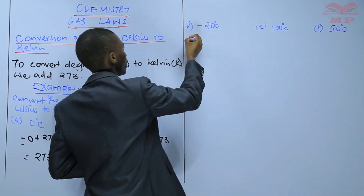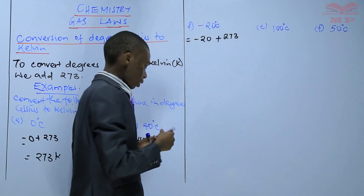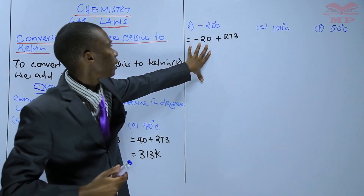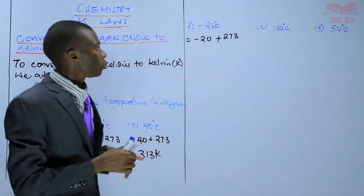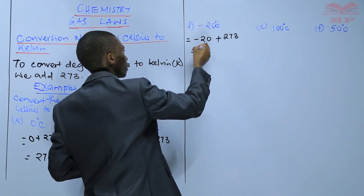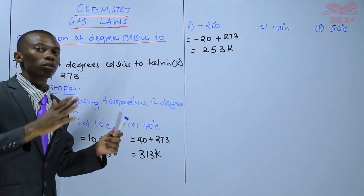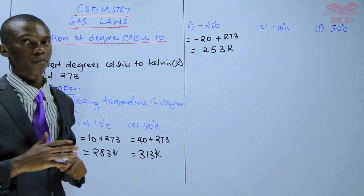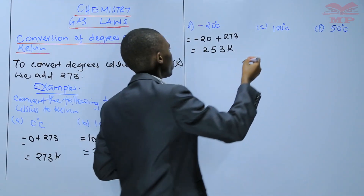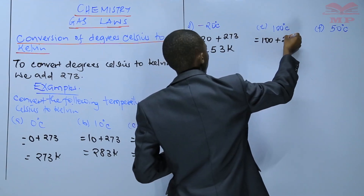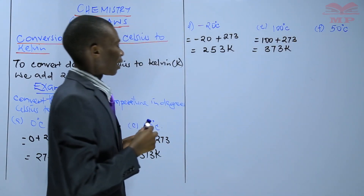So again, we take negative 20 degree Celsius and add 273. Negative 20 plus 273 gives you 253 Kelvin. So basically, negative 20 degree Celsius and 253 Kelvin are the same temperature. The next is 100 degree Celsius: 100 plus 273 gives you 373 Kelvin.